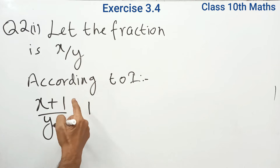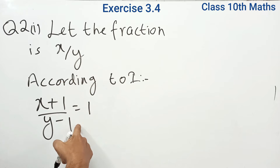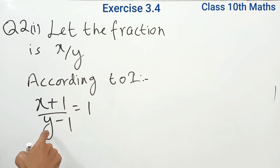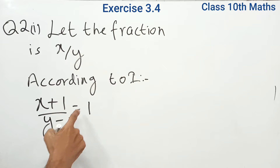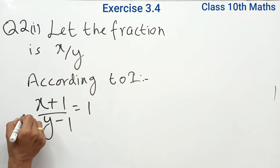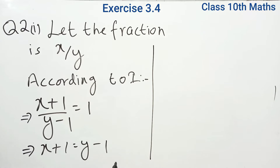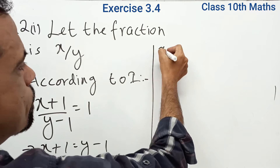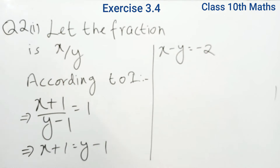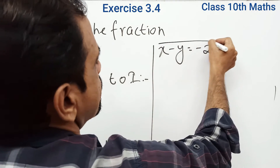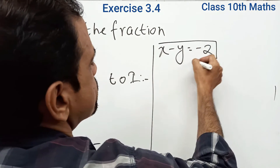We are reading the problem given in English and converting it into mathematics — English to mathematics. We added 1 to the numerator and subtracted 1 from the denominator, so it becomes 1. Solving and reducing this equation gives us: x minus y is equal to minus 2. This is our first equation.